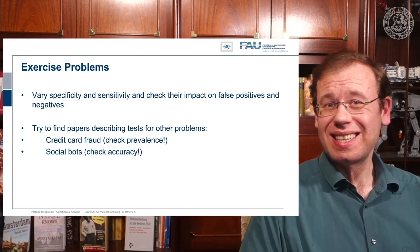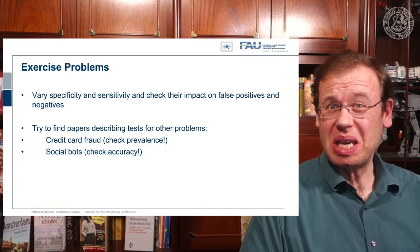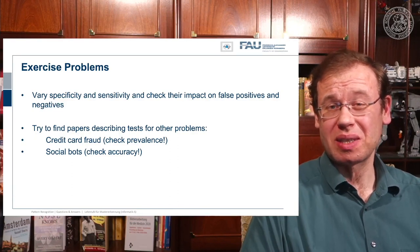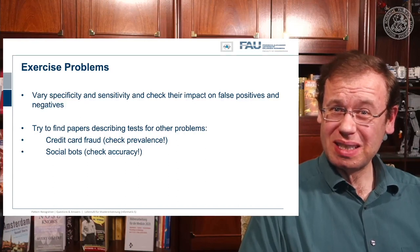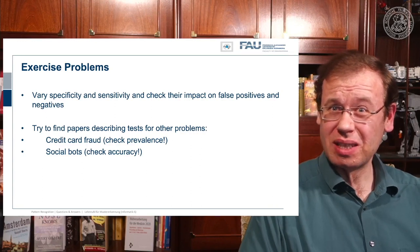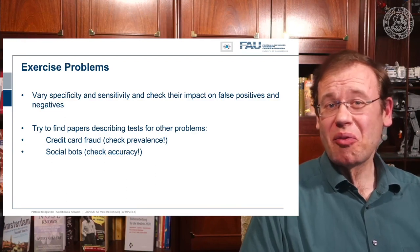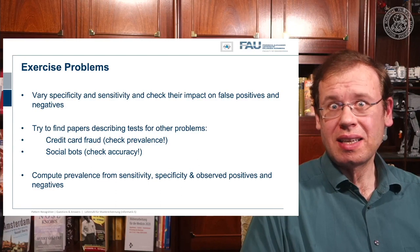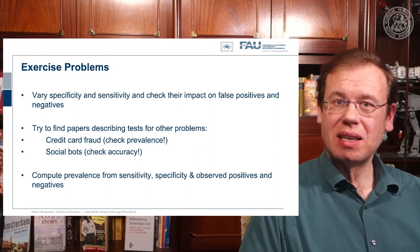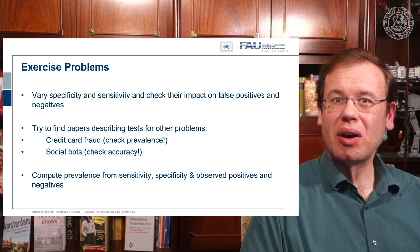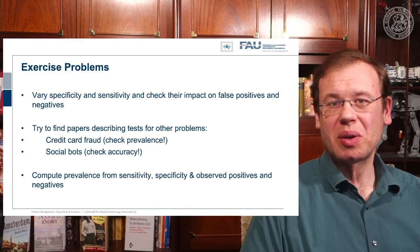If you have a really bad classifier, it will always identify social bots — but does it really help you figure out whether this person is really a social bot or not? Is mass screening with such poor accuracy really a meaningful thing to do? Another very interesting problem is to compute the actual prevalence if you know the sensitivity and specificity of the test and you have the observed number of positives and negatives. This is something you can think about as an exercise problem.